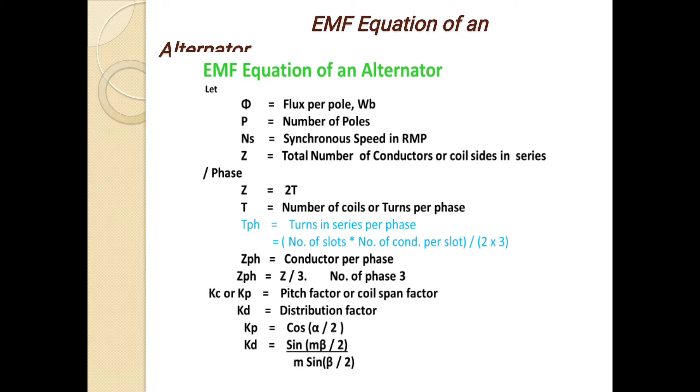We know that Φ means flux per pole, unit of Weber. P is the number of poles and Ns is synchronous speed in RPM. Z is equal to total number of conductors or coil sides in series per phase. Z equals 2T, where T means number of coils or turns per phase. T phase means turns in series per phase.